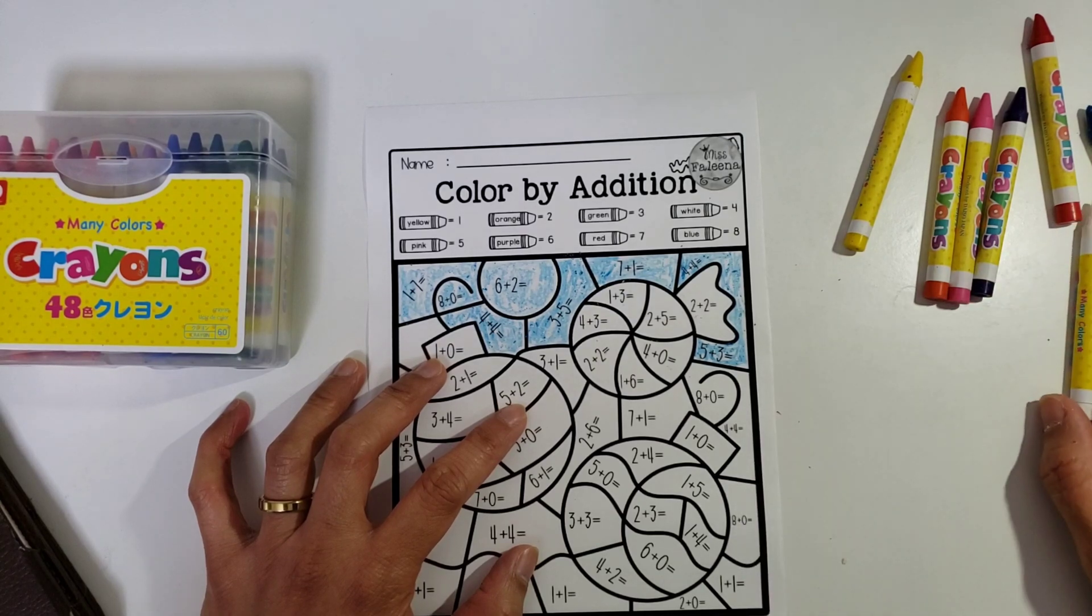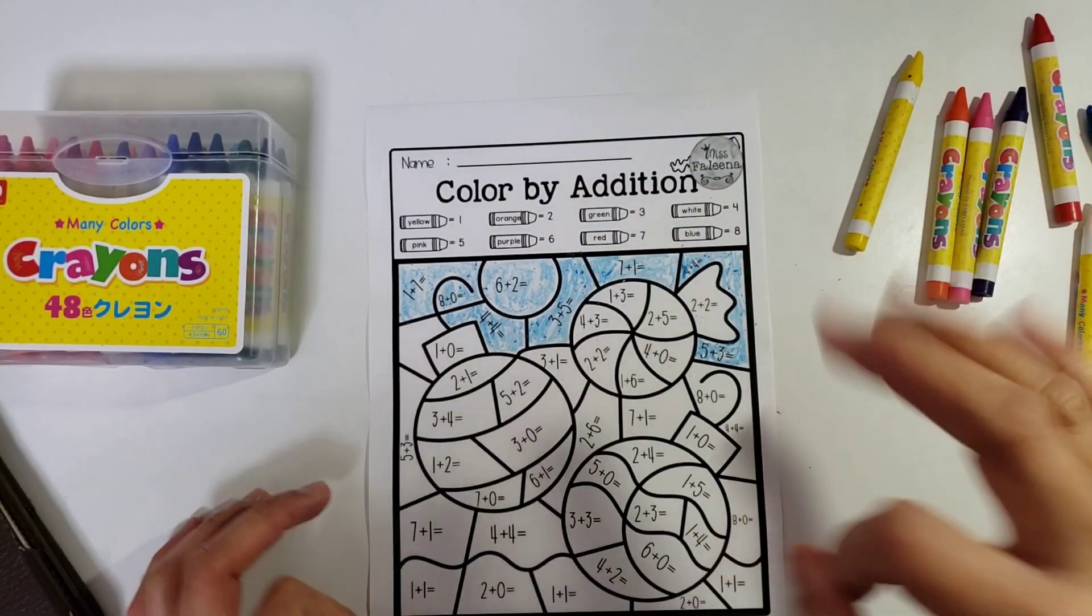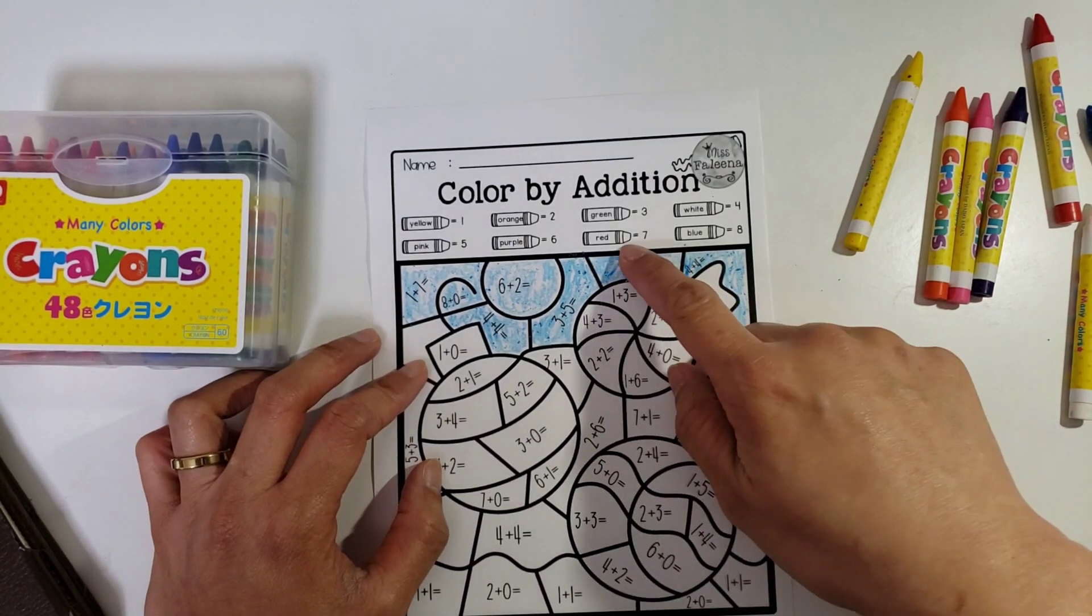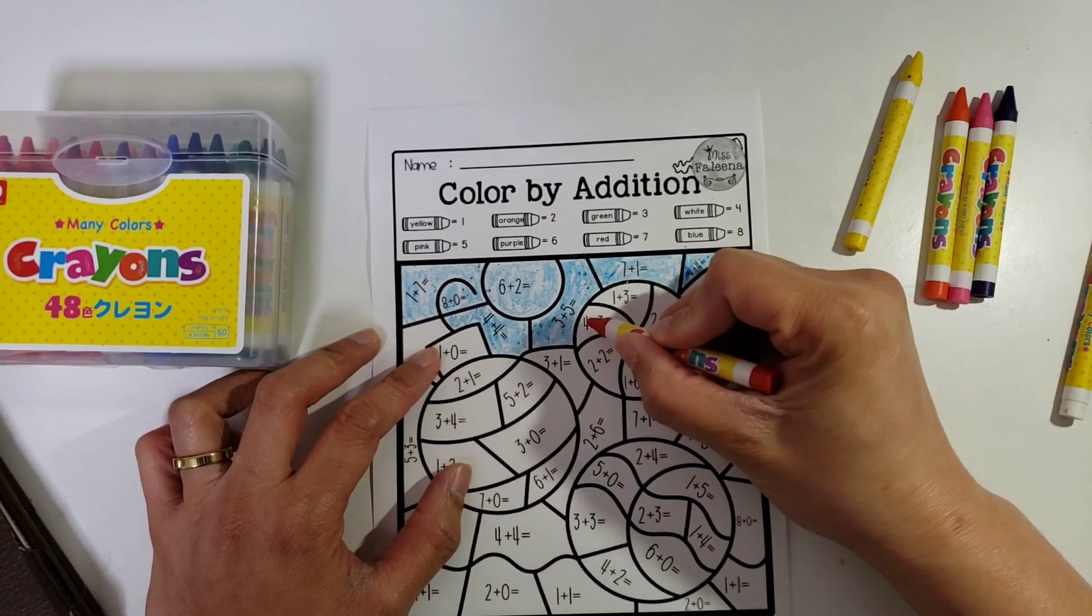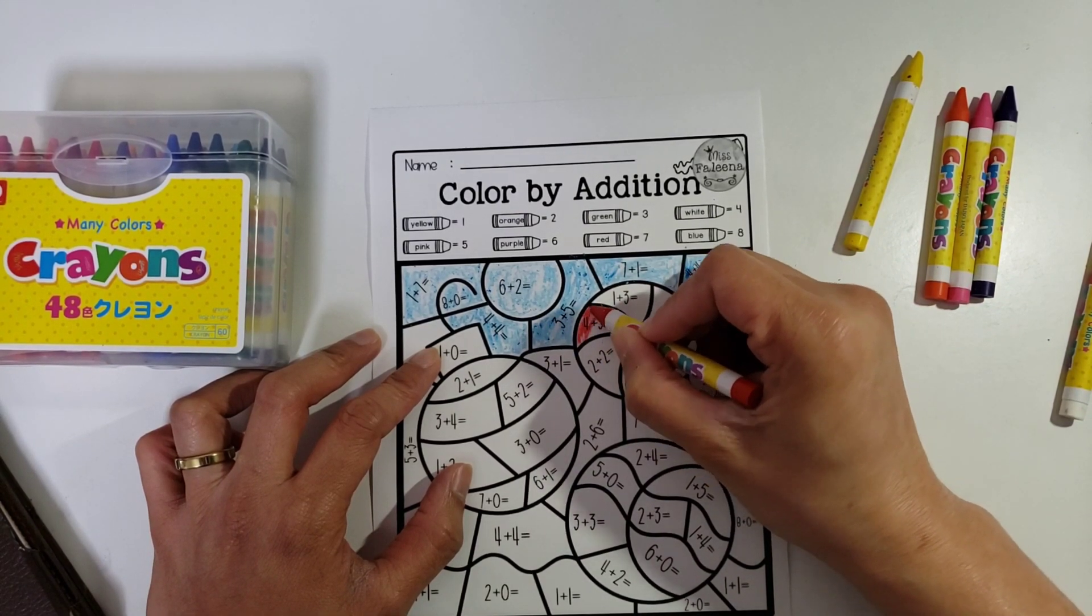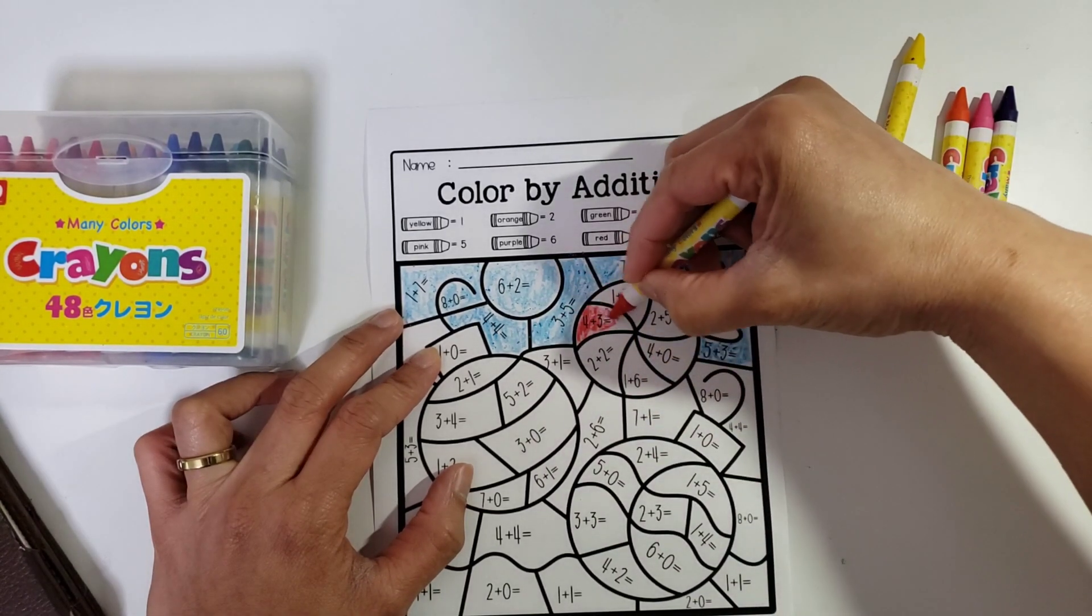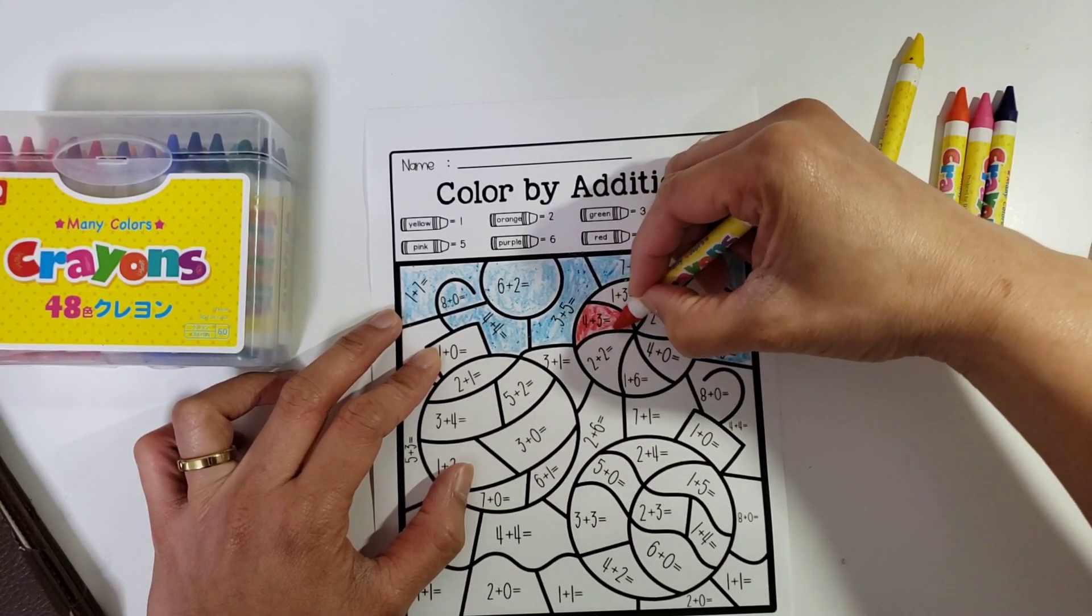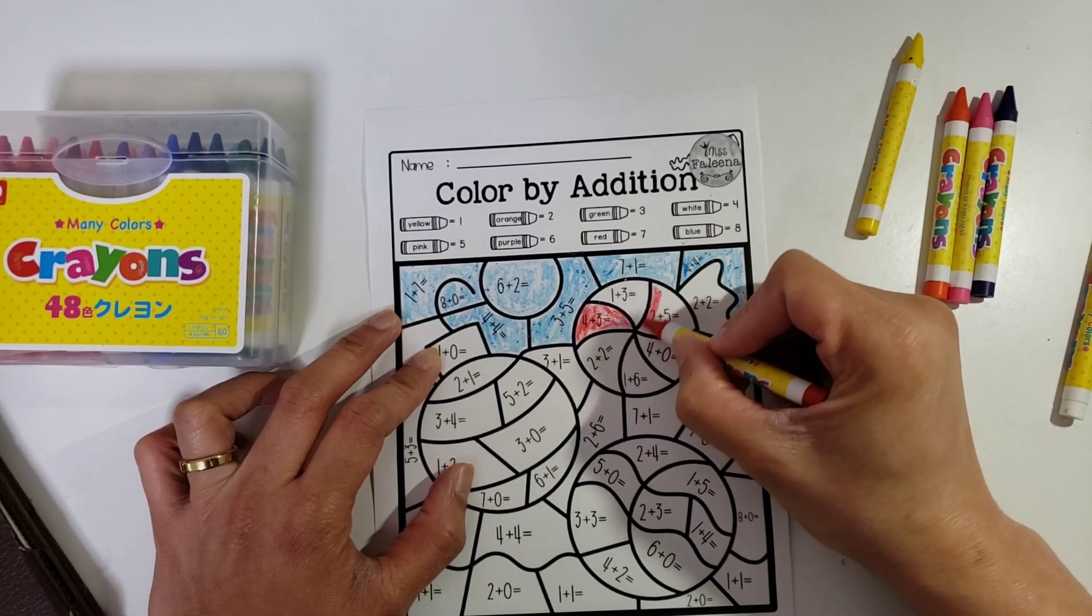So the next one is four plus three. So that is seven. Four plus three is seven, so the equivalent of seven is red. So we will color this one red. And then two plus five equals seven.